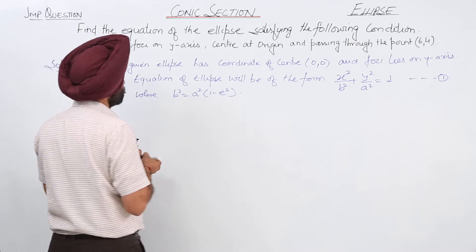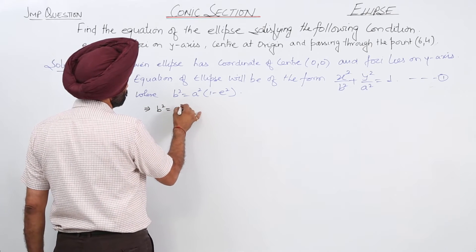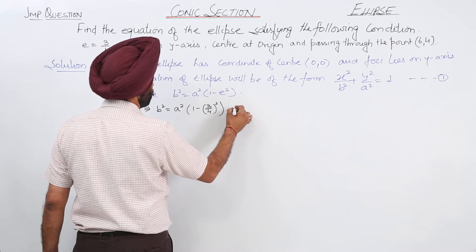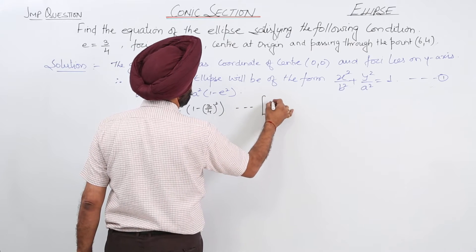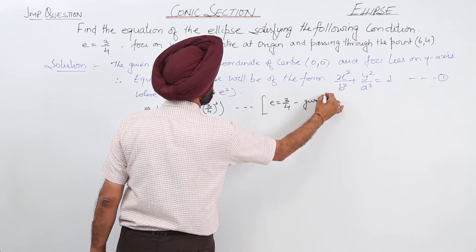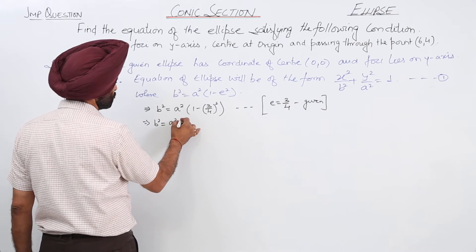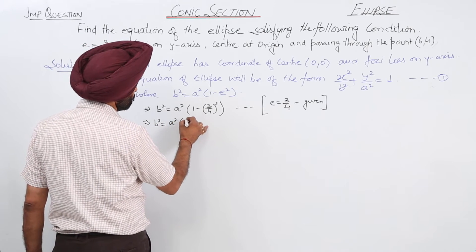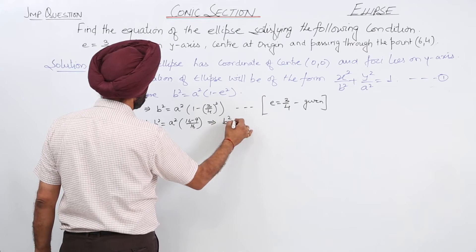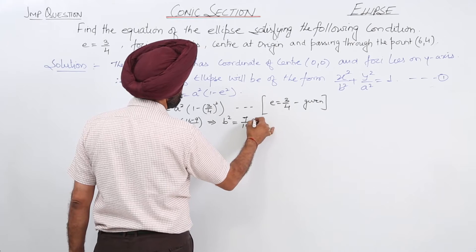Now, e is given 3/4. So b² is equal to a² times (1 minus (3/4)²). E is equal to 3/4 and this is given to us. So b² is equal to a² times (16 minus 9)/16. B² is equal to 7/16 a².